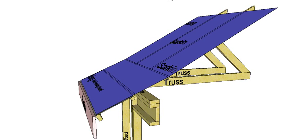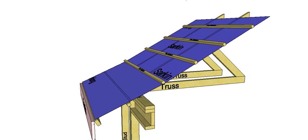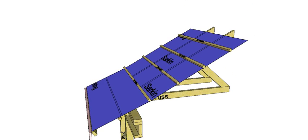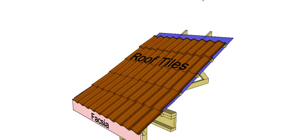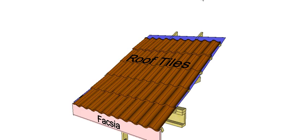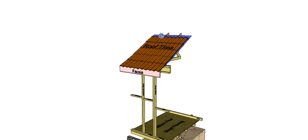The sarking goes on, and they can then batten the rest of the roof and put on the rooftops. So now we actually have the job covered up.